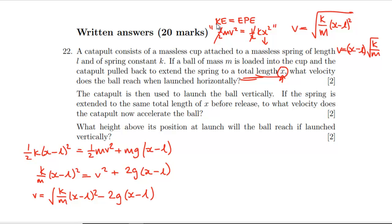To what height above its position at launch will the ball reach if launched vertically? Right, position at launch - is pulling down the catapult part of the launch or not? I'd say it's probably when it's let go, isn't it?